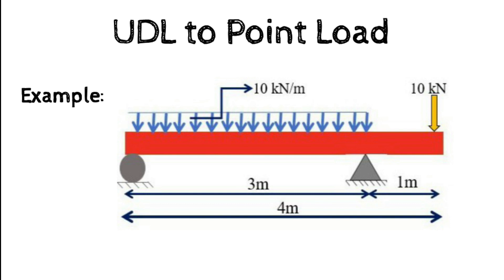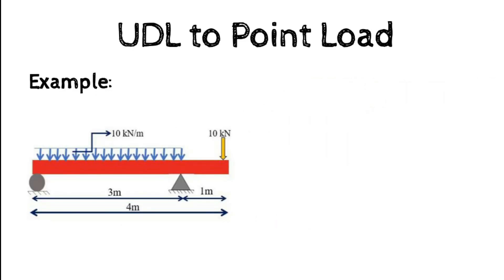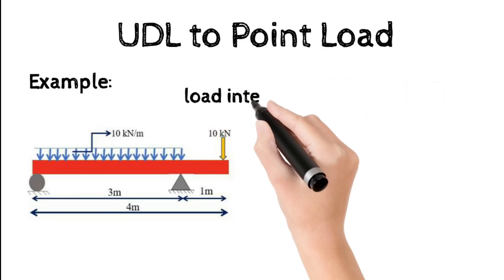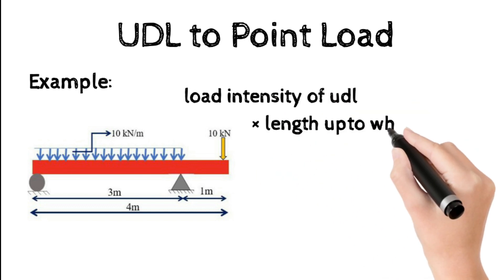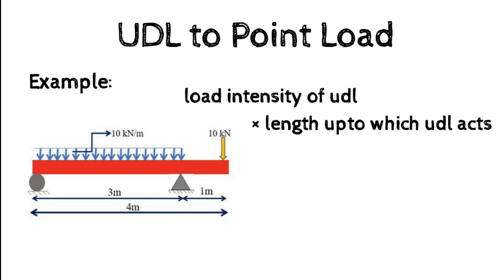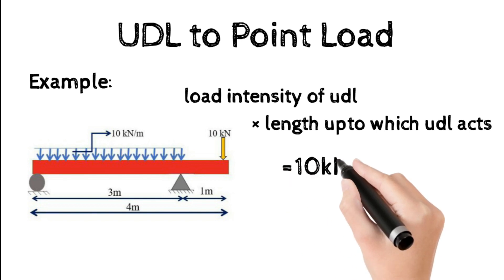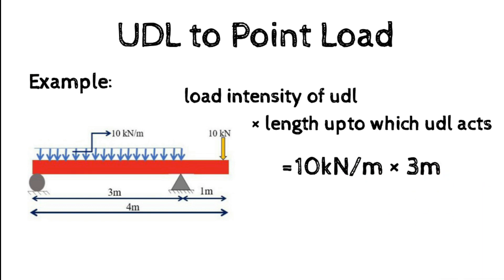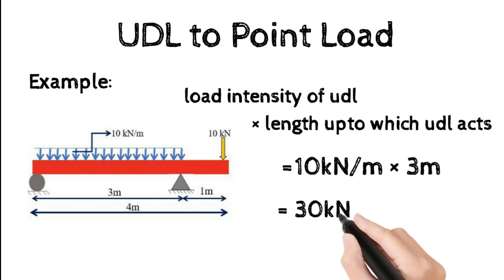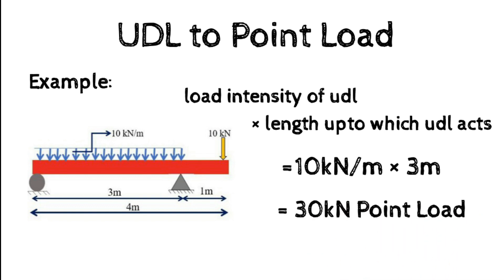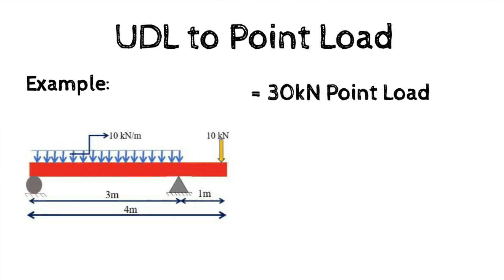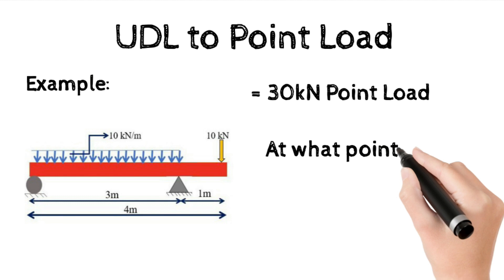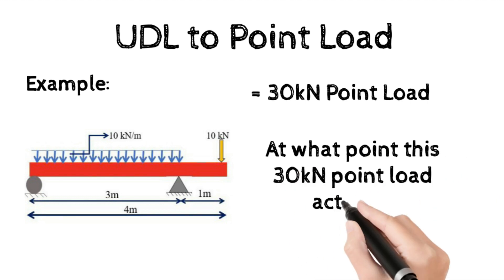To convert this 10 kilonewton per meter UDL load to a point load, multiply the intensity of the uniformly distributed load by the length of the beam over which the UDL acts. The load intensity is 10 kilonewton per meter, multiplied by 3 meters, giving us 30 kilonewton as the equivalent point load. Now the question is: at what point does this 30 kilonewton point load act?